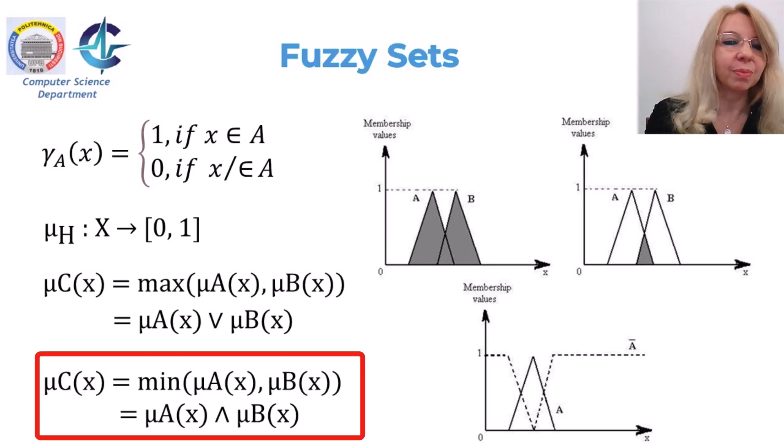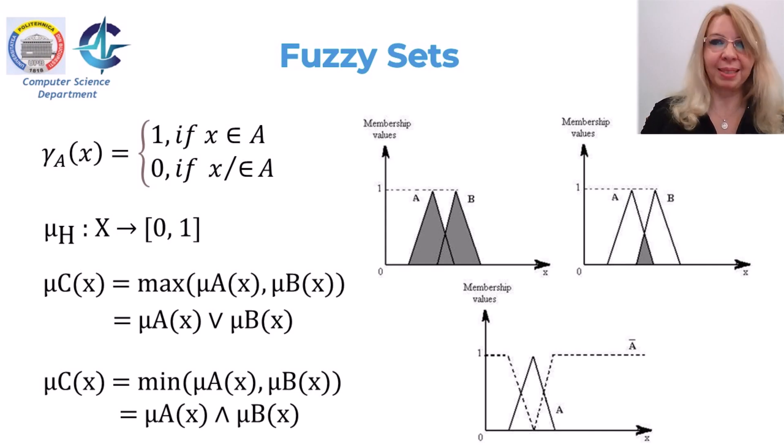The intersection of two fuzzy sets A and B is another operation on fuzzy sets. It gives us the fuzzy set C, whose membership function is related to those of A and B by means of a minimum operator. The min and max operations can be seen.